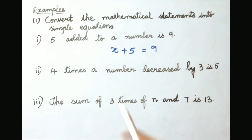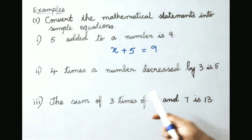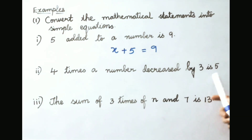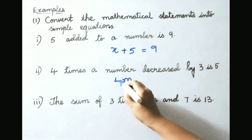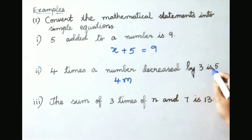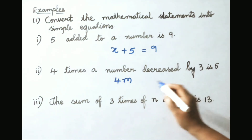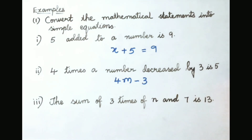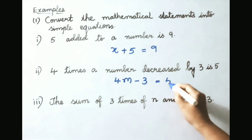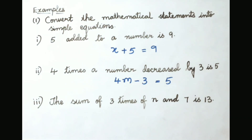Second: 4 times a number decreased by 3 is 5. Let the number be m. 4 times a number is 4m. Decreased by 3, that means minus 3, equals 5. So the simple equation is 4m minus 3 equals to 5.